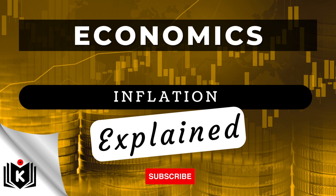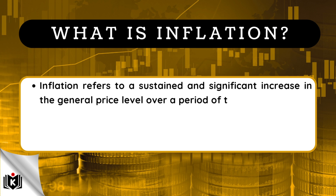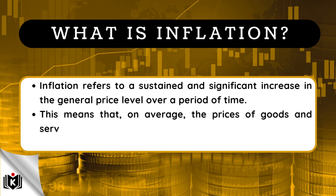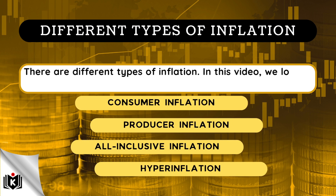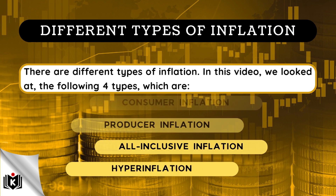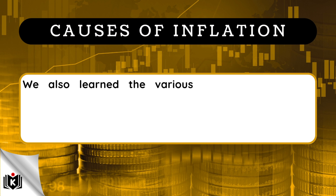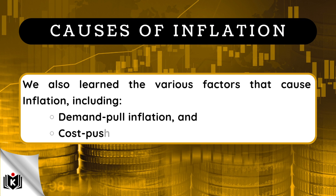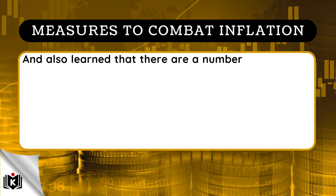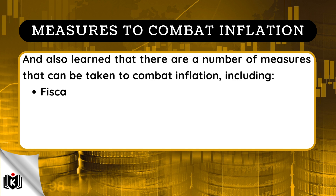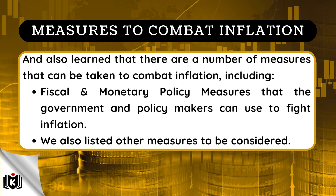Now back to today's topic. Just to recap on what we covered in this video: inflation refers to a sustained and significant increase in the general price level over a period of time, meaning that on average the prices of goods and services are rising while the purchasing power of a unit of currency is decreasing. There are also different types of inflation — we looked at consumer inflation, producer inflation, all-inclusive inflation, and hyperinflation. We also learned the various factors that cause inflation, including demand-pull inflation and cost-push inflation. We covered a number of consequences as a result of inflation, and also learned that there are a number of measures that can be taken to combat inflation, including fiscal and monetary policy measures that the government and policy makers can use to fight inflation. We also listed other measures to be considered.